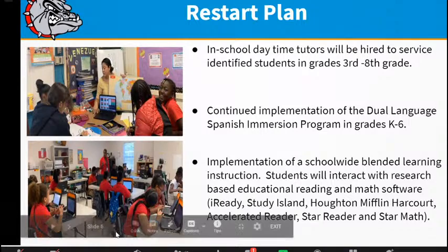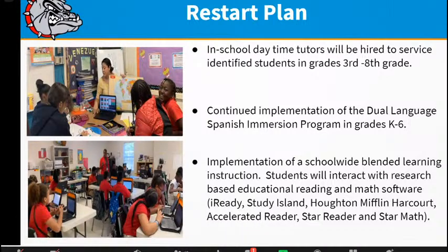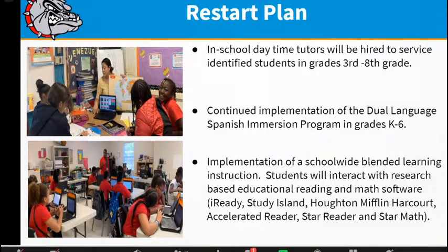Our dual language program updates: we have changed from a co-teaching model to a bilingual teacher assistant. We are continuing to provide support for our middle school students — the dual language immersion program began in kindergarten and stops at fifth grade. Our sixth, seventh, and eighth grade students need support to continue and retain the language they were learning. We are in the process of hiring a bilingual facilitator to work with our upper grade students — we heard the calls from those parents who went through all those years of dual language, and we are going to support them in the upper grades.